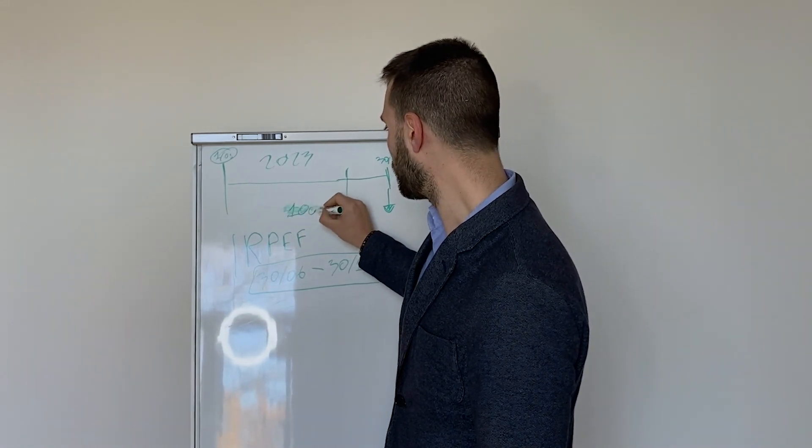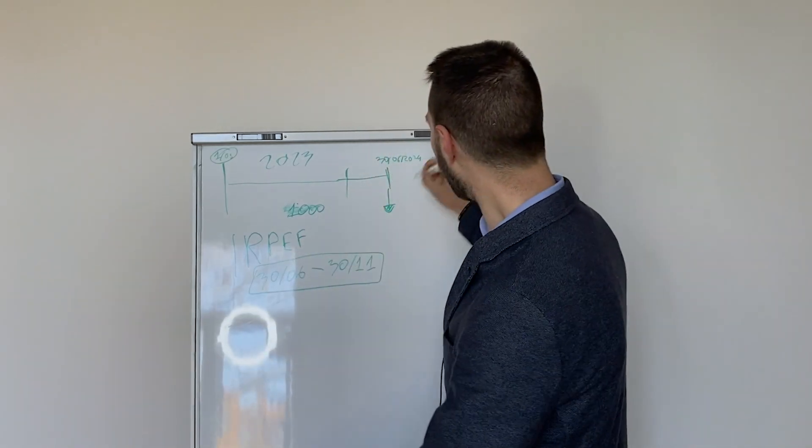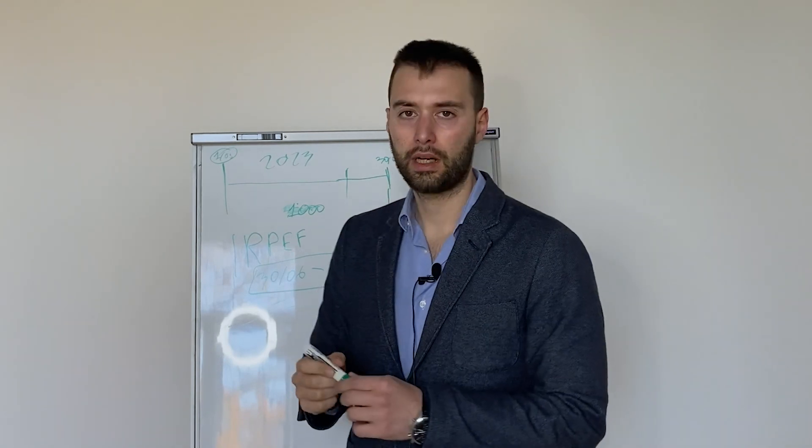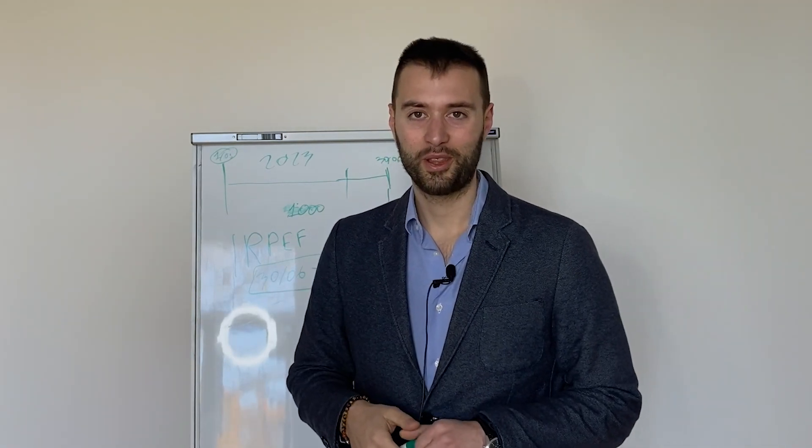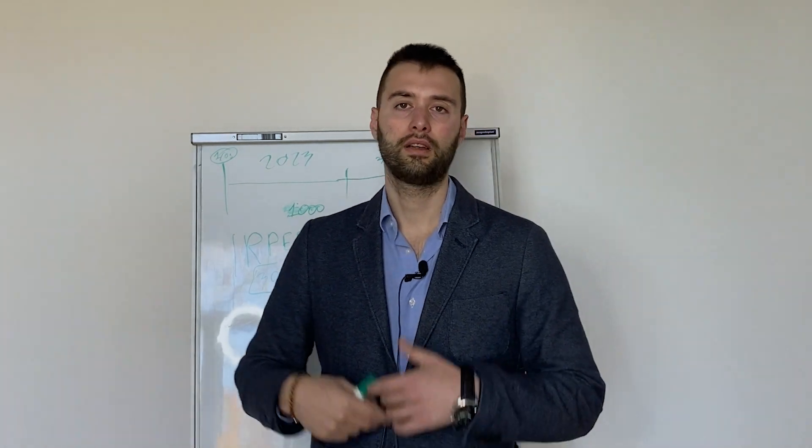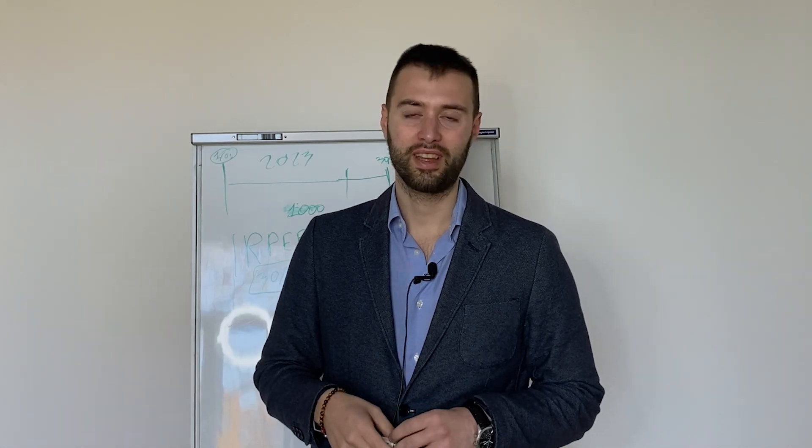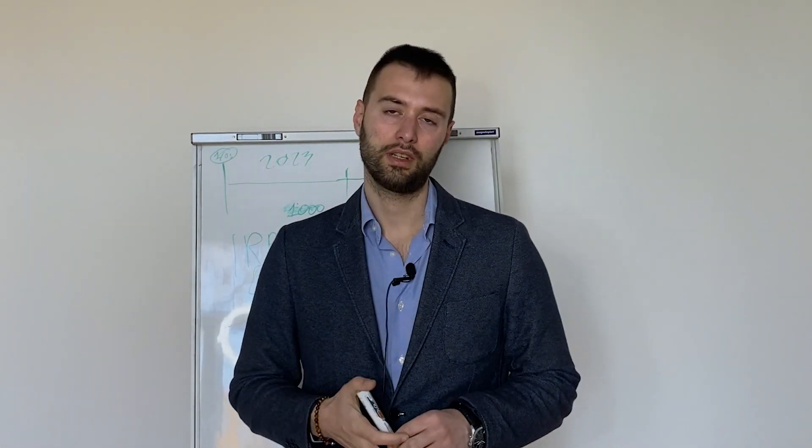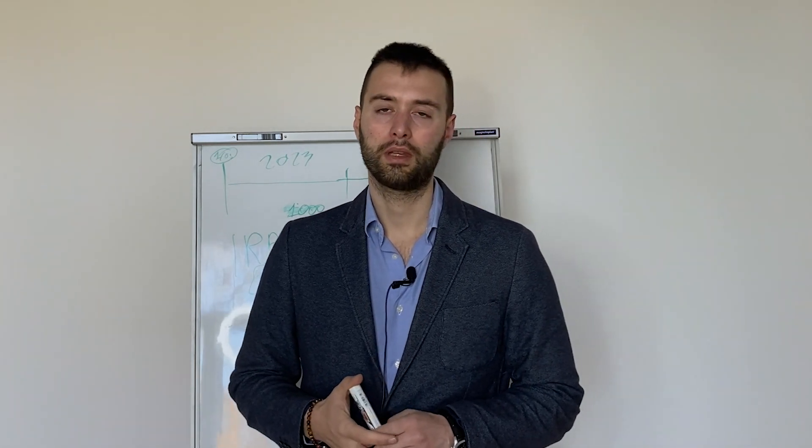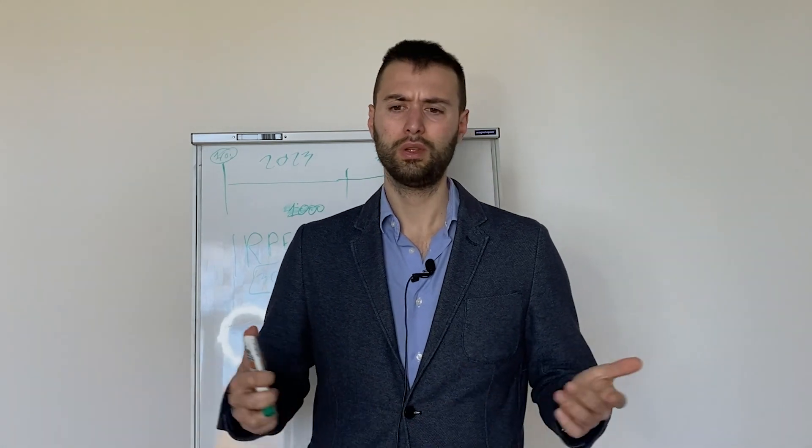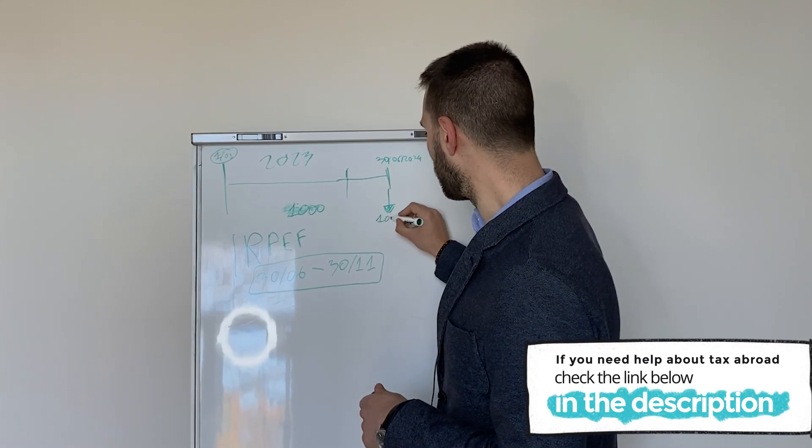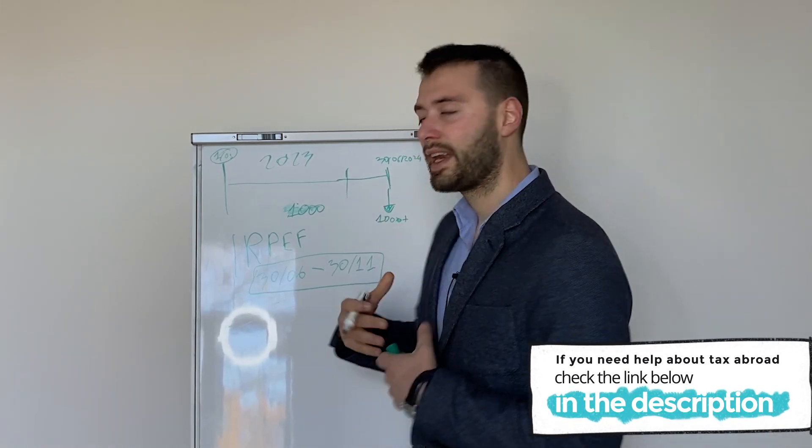Let's say that you calculated the IRPEF and you need to pay 3,000 euros, or let's make it more simple, 1,000 euros. Lucky you. So you pay 1,000 euros of taxes. So the 30th of June your accountant sends the declaration, normally earlier than the 30th of June, and calls you saying, 'Hi Mark, please come here, you need to pay 1,000 euros of taxes for 2023.' But you don't have to pay only 1,000 euros, you need to pay 1,400 euros. You say, 'What? 1,400 euros?'